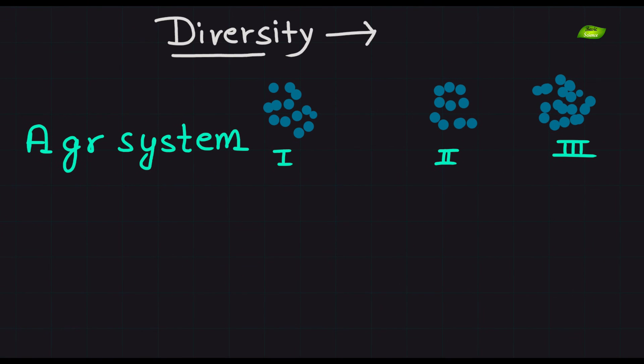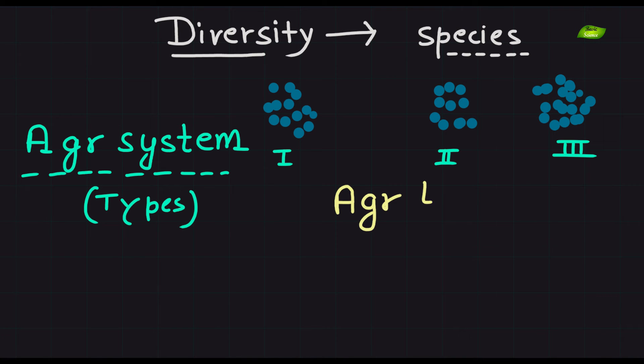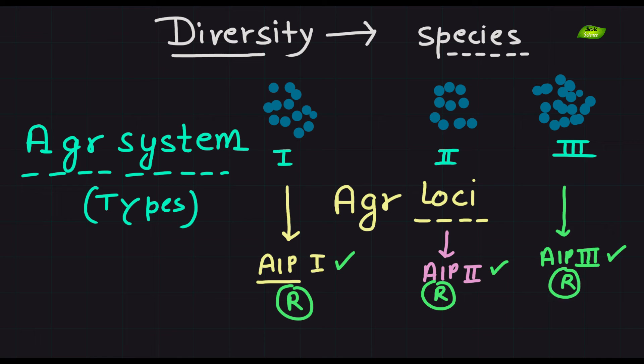Diversity extends further, with Staphylococcus species being classified into different AGR types, based on the sequence variability. Within the AGR loci, each AGR type represents a unique set of AIPs and receptor specificities, contributing to the complexity and the adaptability of Staphylococcus quorum sensing networks.